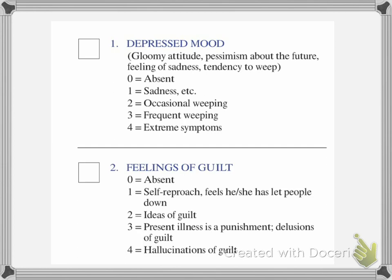The first question asks the patient about depressed mood: have they been gloomy, thinking negatively about the future, feeling sad, or crying? If they're not depressed at all, mark it zero — absent. A little bit sad is a one. If they sometimes cry, mark it a two. Frequent crying or weeping is a three. Extremely depressed is a four.